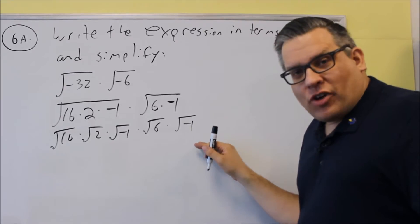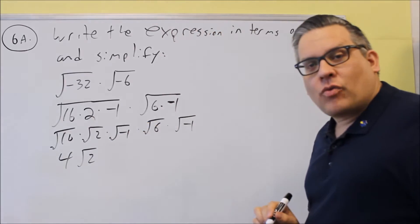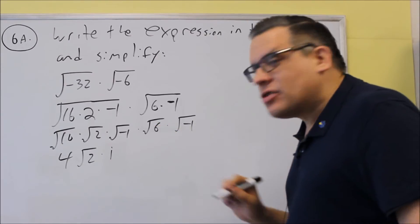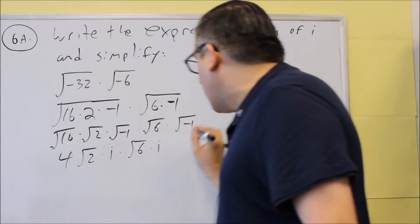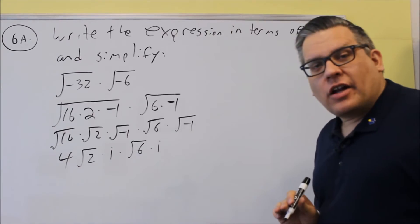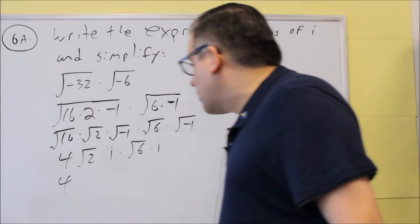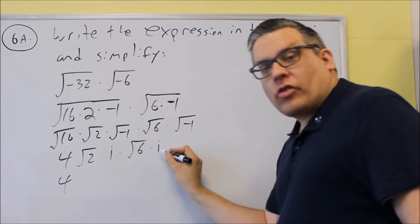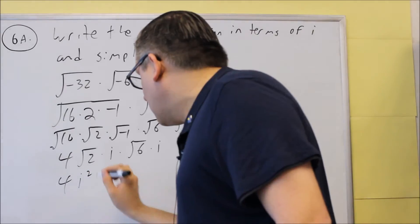Now we're going to start simplifying. Square root of 16 is 4. The square root of negative 1 we're going to turn into i, because that's the definition — i equals the square root of negative 1. Next I've got a square root of 2, and once again I have another square root of negative 1, so we're going to turn that into an i as well. Since multiplication can be done in any order, I can switch these around. I'll leave the 4 out front, and then I have i times i, which gives me i squared.